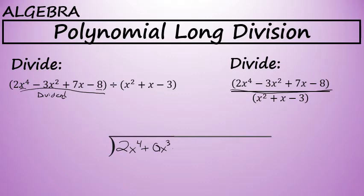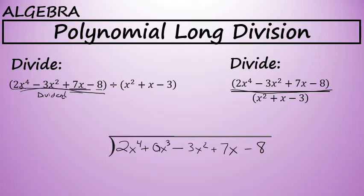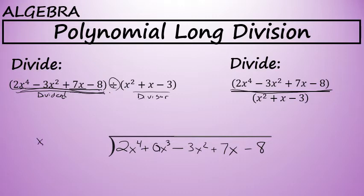The next term will be the X squared term, which in this case is negative 3X squared. The X to the 1st term is 7X, also known as the linear term, and the constant is minus 8. After the division sign comes what is known as the divisor — that's what you are dividing by. That is written, also in decreasing degree, outside of the division sign.